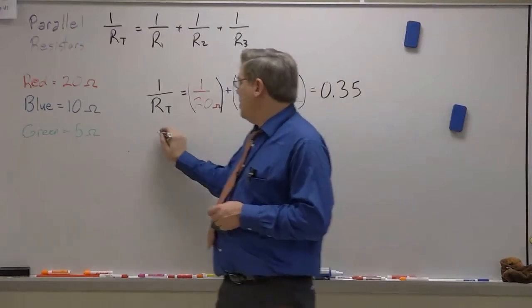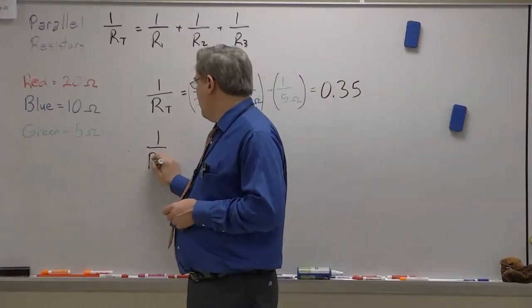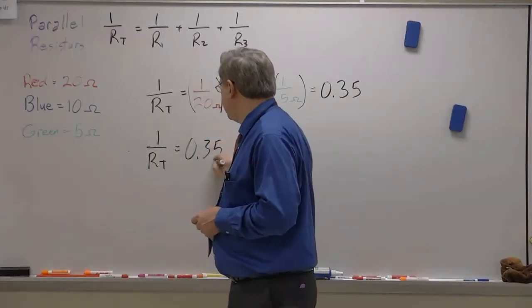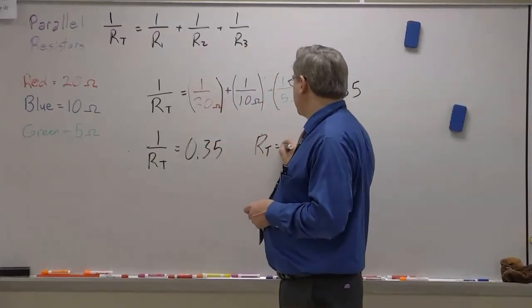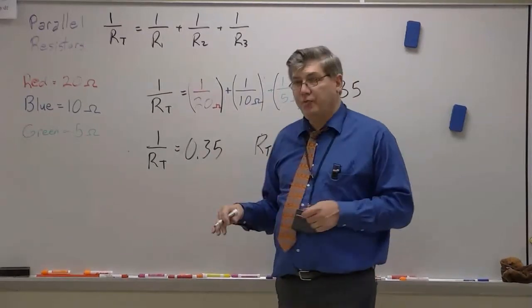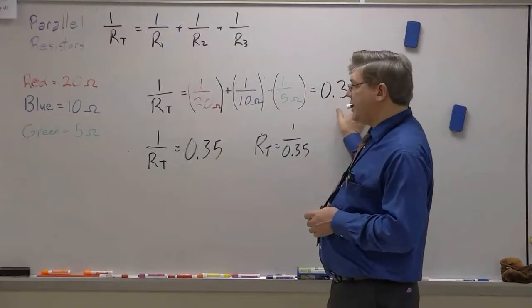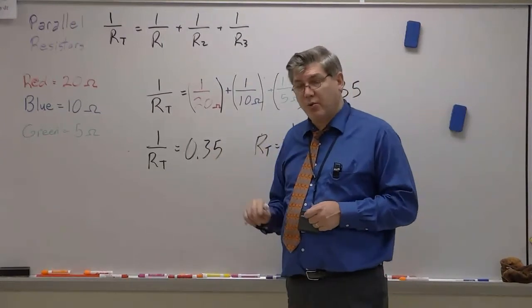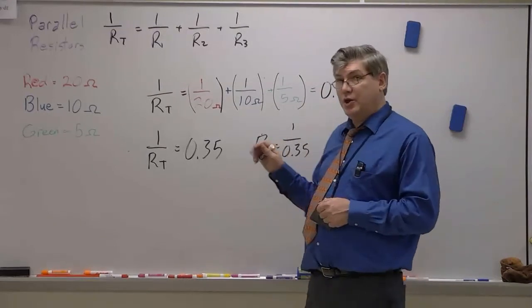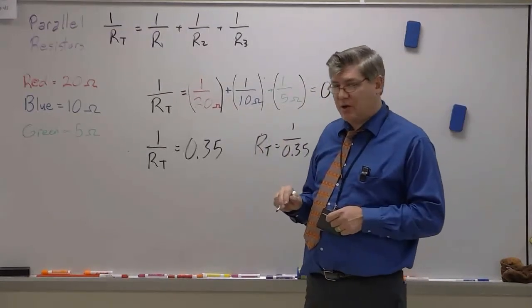But remember that this is the reciprocal. 1 over RT is equal to 0.35. So RT is equal to 1 over 0.35. So I can either total this and then use a 1 over button or a reciprocal button if you have it on your calculator. Or you can write it down and then do 1 divided by this.